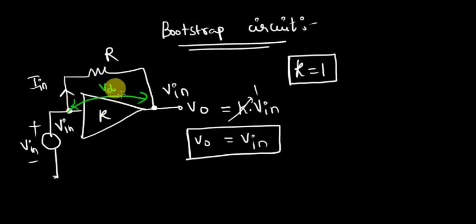Potential difference equals 0, which indicates that the current entering through this resistance equals 0. So therefore, the drop across this resistance is 0.